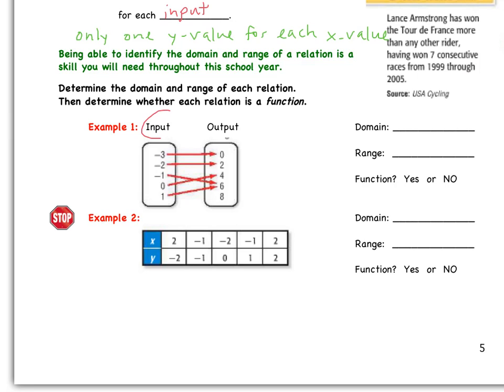So all we have to do here is copy down those values in that box underneath input. So we have negative three, negative two, negative one, zero, and one.